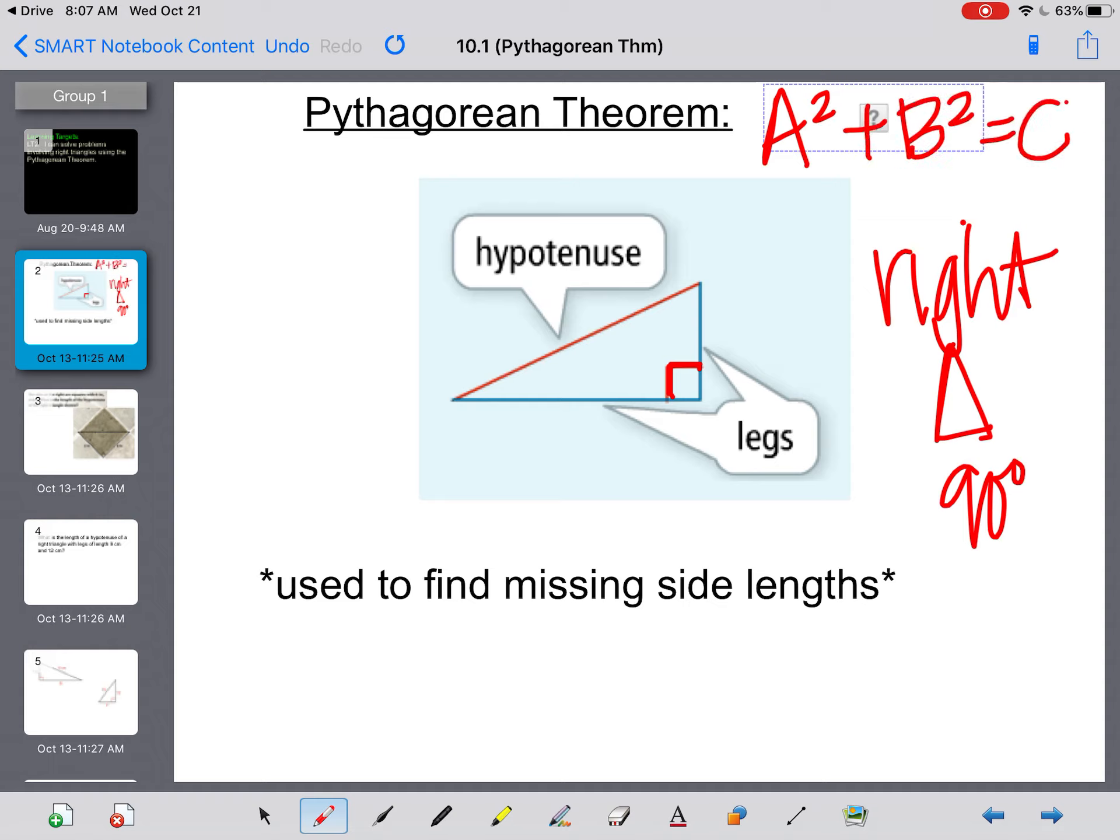The formula for that is A squared plus B squared equals C squared. You cannot rearrange those letters at any point. They have to be, it always has to be equal to the C. What is the A, B, and C?